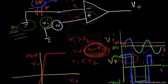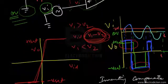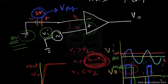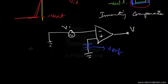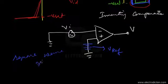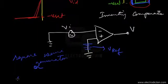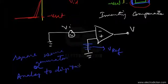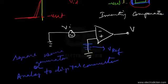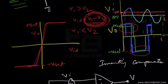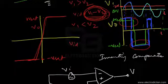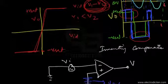We can see that by applying a sinusoidal wave at the input to the op-amp, a square wave basically results, so it's often called a square wave generator. It's sometimes also called an analog to digital converter, since square waves are much more useful in digital electronics. It's used to convert the analog signals coming in sinusoidal waveform to square wave voltages.